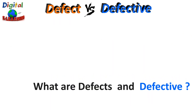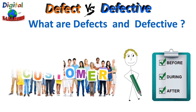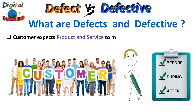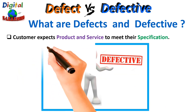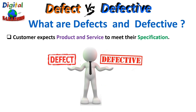So what are defects and defectives? The customer expects products and services to meet their specification. And when they don't meet the specification, either a defect or defective occurs. The product may have many defects, but the product is not defective unless the defect prevents the product from functioning. And if the product is not usable, it is considered as a defective product.